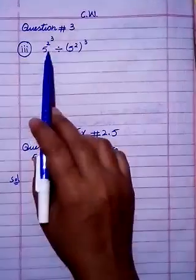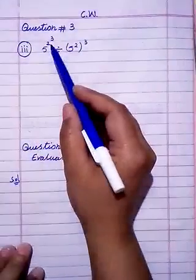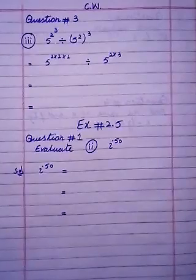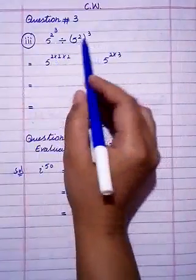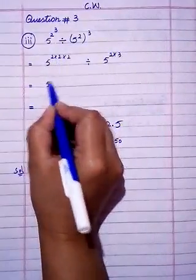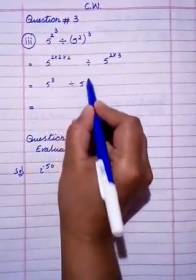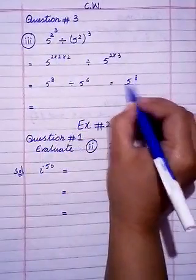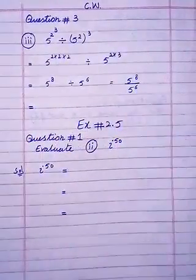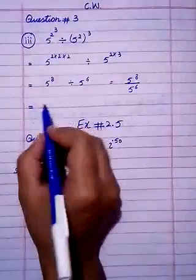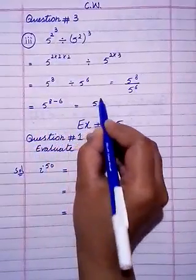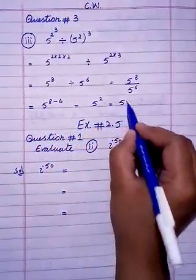Next, solve question number 3. The expression is 5 raised to power 2, then whole raised to power 3. Note: 5 raised to power 2 means power is 2, raised to power 3. So 2 raised to power 3 means 2 multiplied 3 times: 2 times 3 equals 6, giving 5 raised to power 6. Wait — 2 multiplied by 3 gives 5 raised to power 8, divided by 5 raised to power 6. Since bases are the same and dividing, subtract powers: 8 minus 6 equals 2. Answer is 5 raised to power 2, which equals 25.